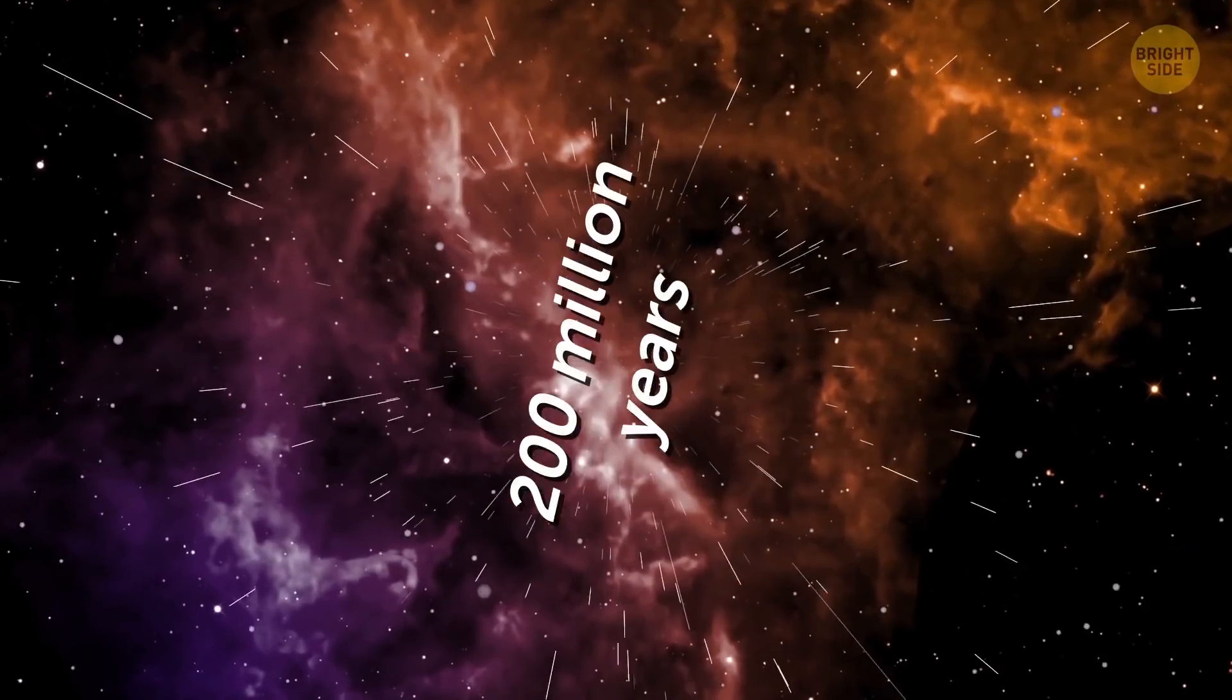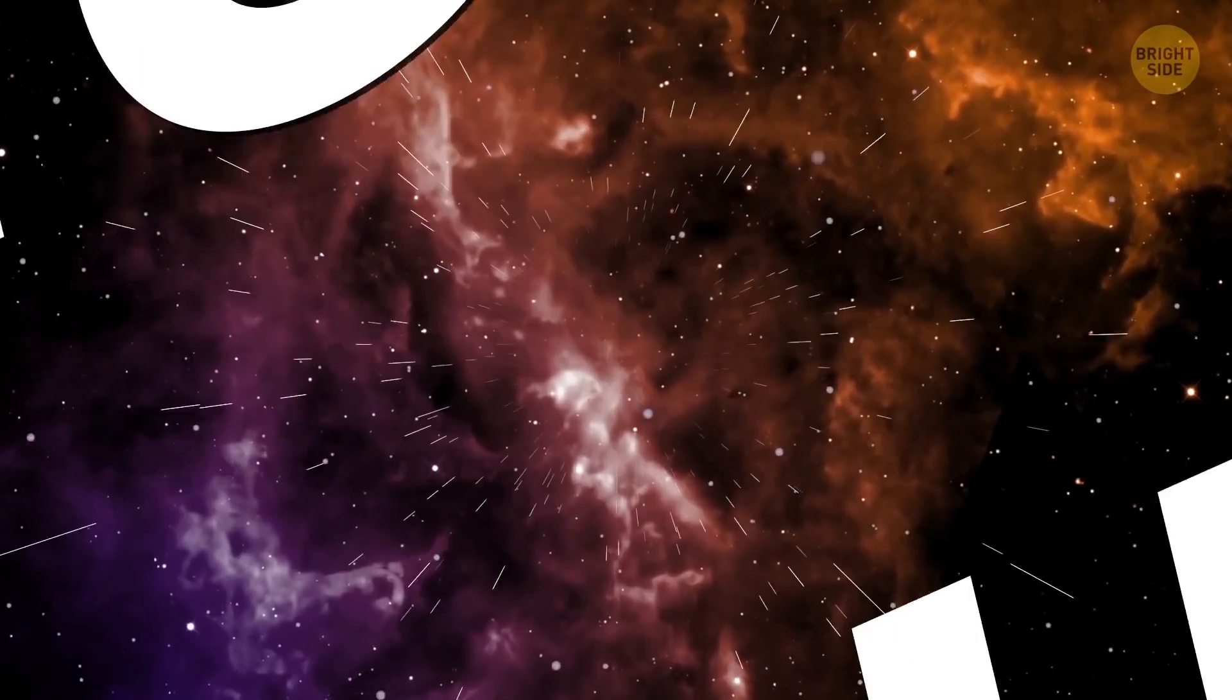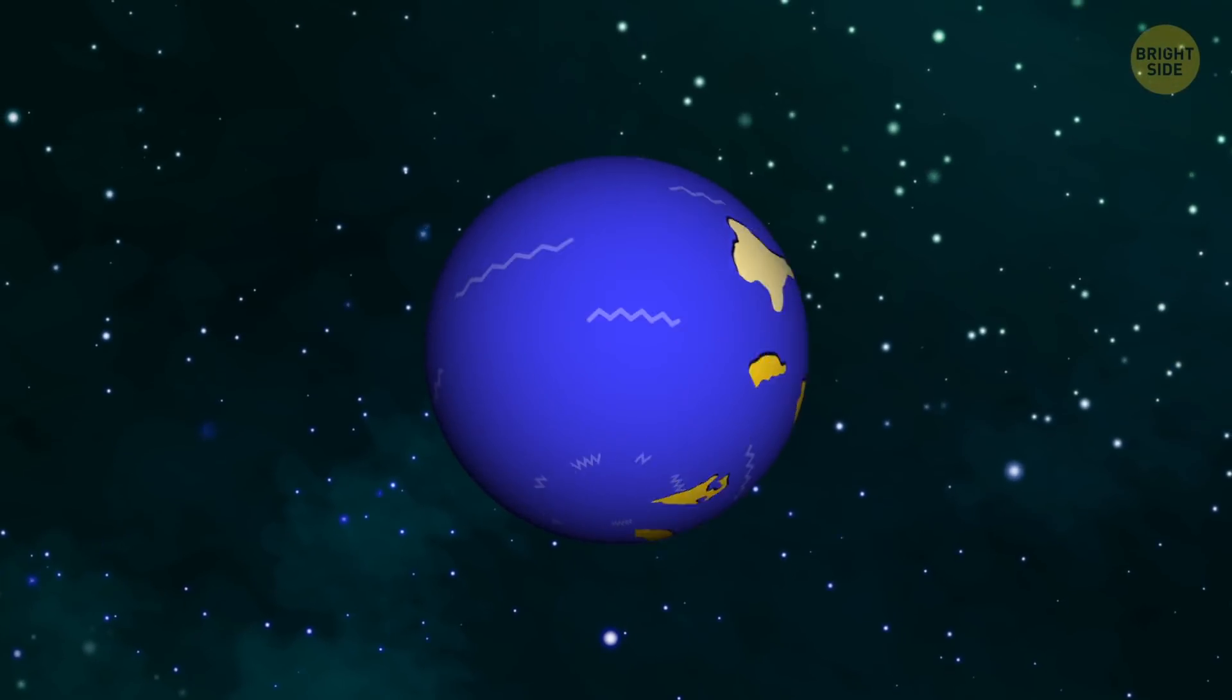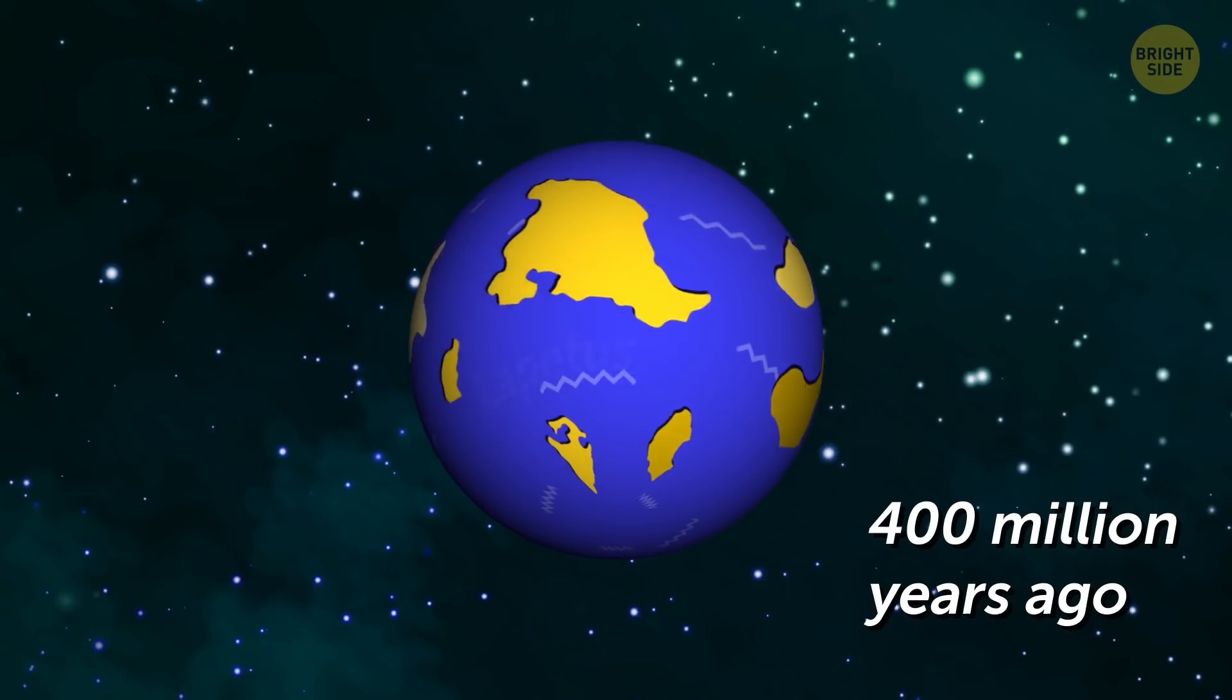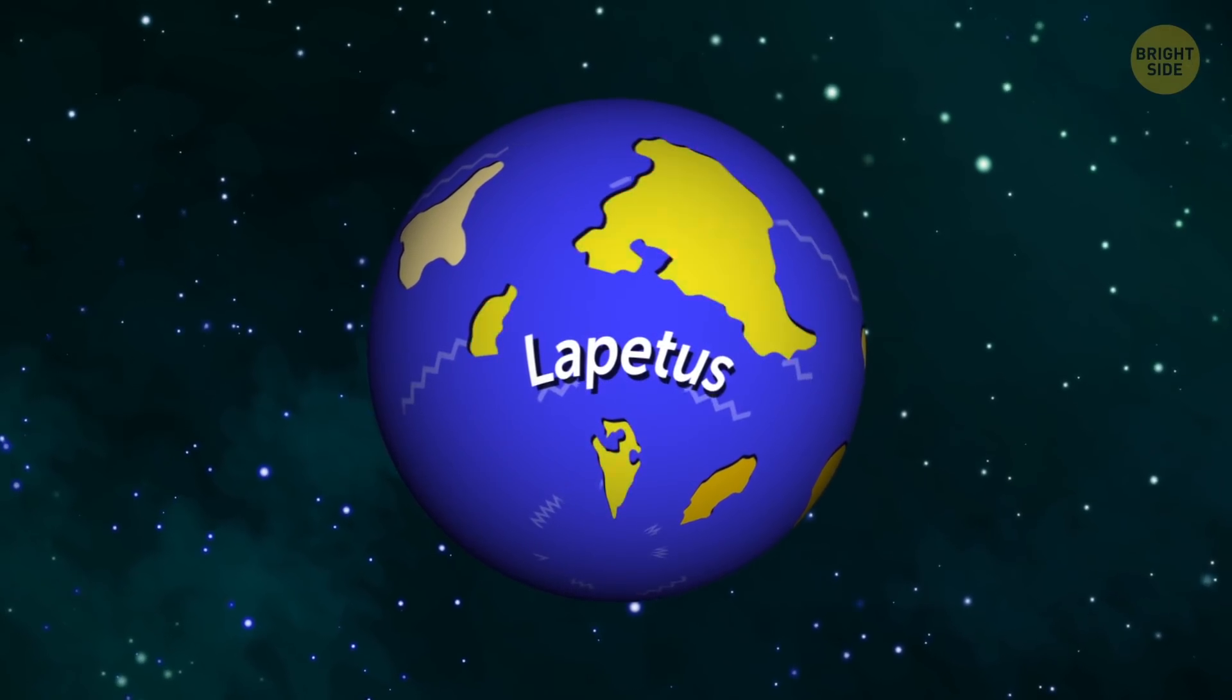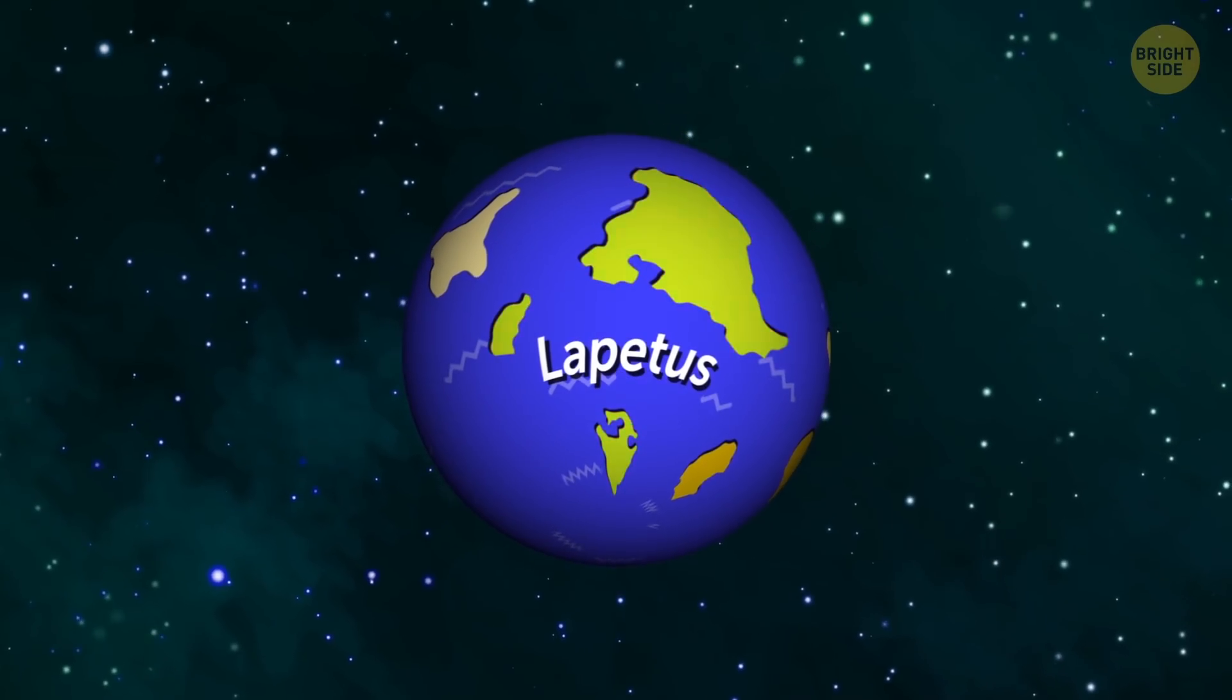After the initial split, another sea appeared 200 million years later. It became the famous Iapetus superocean, and it stuck around until 400 million years ago. It formed in the southern hemisphere of our globe around three ancient continents.